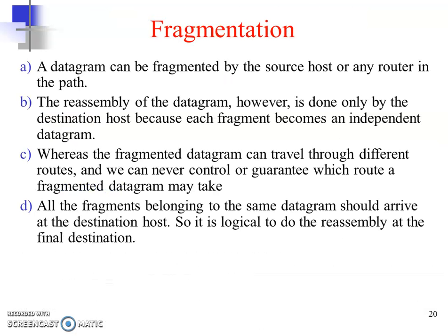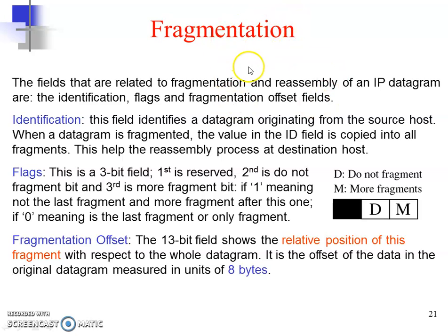Remember three things about fragmentation. First, the datagram can be fragmented by the source or any router along the path. Second, reassembly of the datagram is done at the destination, because each fragment is treated independently and may arrive out of sequence. Third, all fragments belonging to one datagram should be collected and reassembled at the destination. The identification, flags, and fragmentation offset fields help to successfully carry out the process of fragmentation.